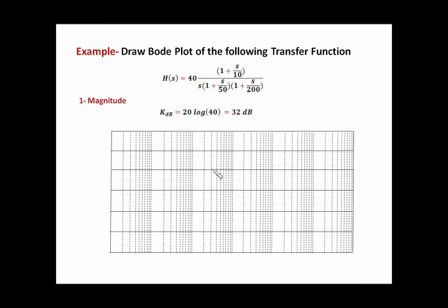We use a semi-log graph to plot the magnitude. We need to define the range of the frequency. When doing a Bode plot, we plot magnitude and phase, so I need to make sure the frequency range covers what is required for the phase. Since the first corner frequency is at 10, for the phase I need to start a decade earlier, so the frequency axis will read 1, 10, 100, 1000, and so on.